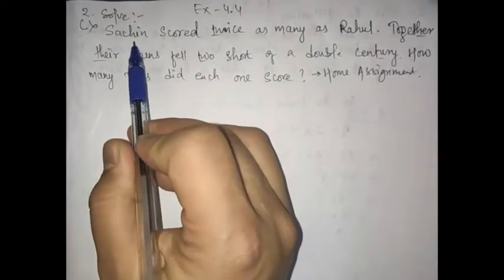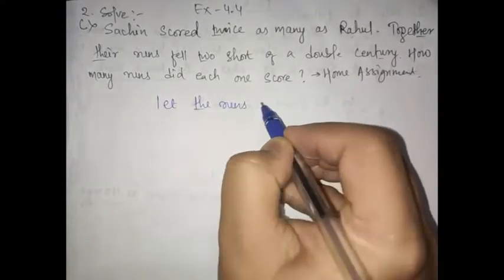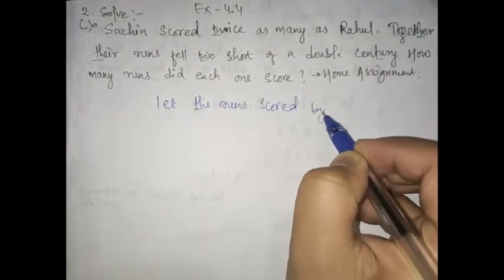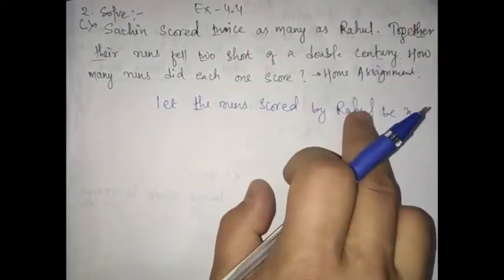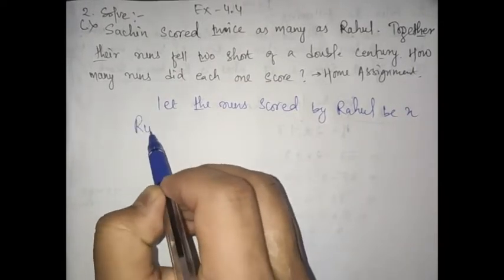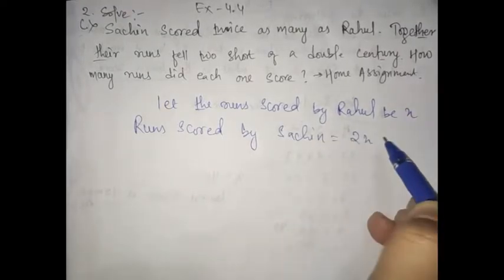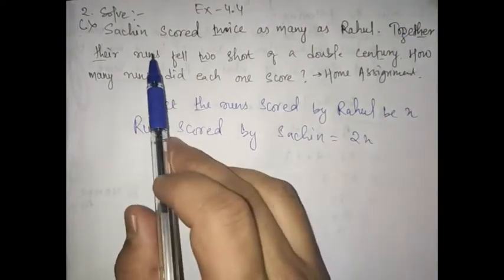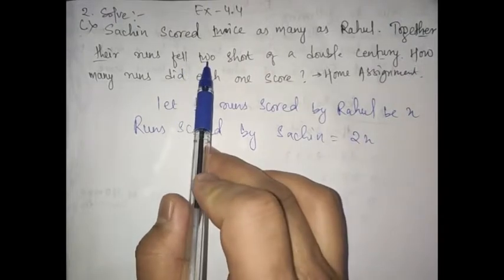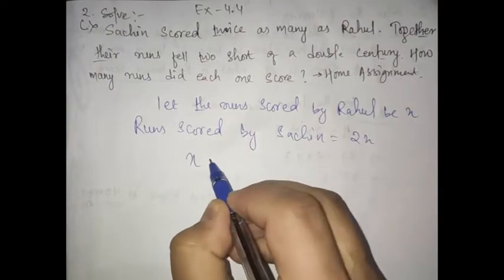Sachin scored twice as many as Rahul — Sachin is scoring twice that of Rahul. So let the runs scored by Rahul be X. Rahul is making X runs, then Sachin is scoring twice that of Rahul, so runs scored by Sachin is 2X. Together it will be X plus 2X.